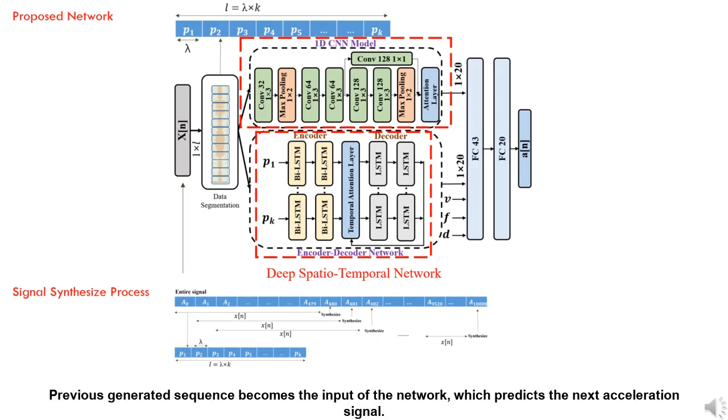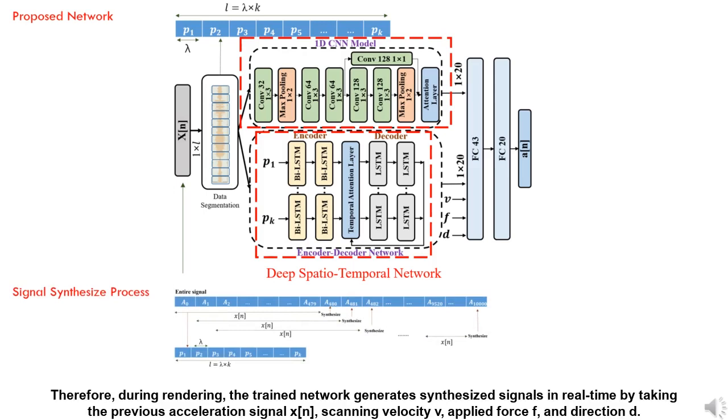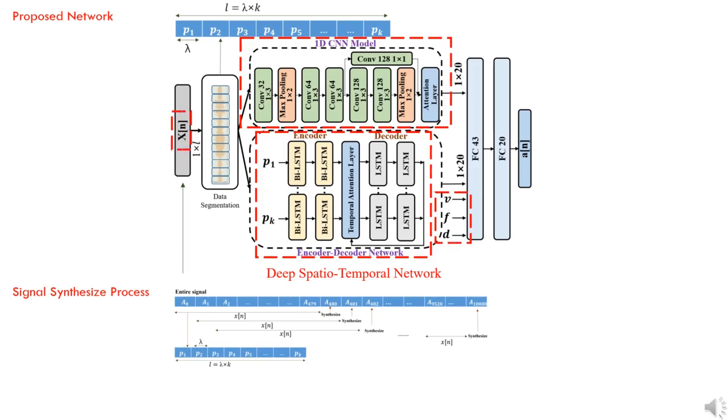Previous generated sequence becomes the input of the network, which predicts the next acceleration signal. Therefore, during rendering, the trained network generates synthesized signal in real-time by taking the previous acceleration signal action, scanning velocity V, applied force F, and direction d.